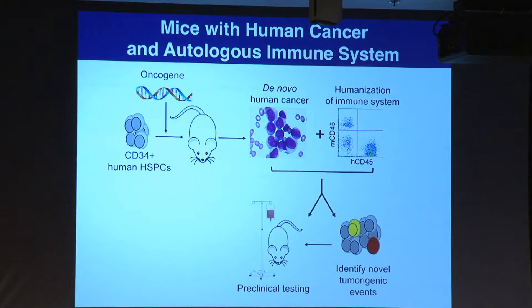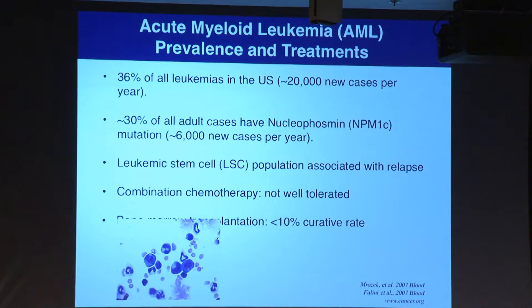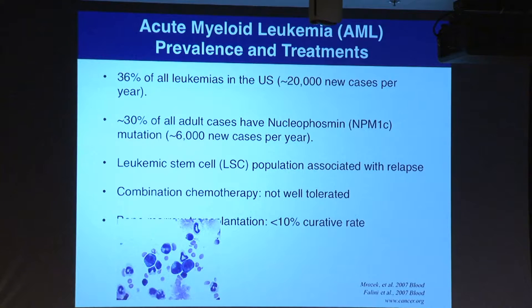I want to use an example using human AML—acute myeloid leukemia. This is a major disease representing 36% of all leukemias. In the US alone, there are 20,000 new cases each year, so around 400,000 new cases worldwide each year. One of the key mutations in AML is NPM1 mutation, where the protein is translocated to the cytosol. It occurs in 30% of cases.